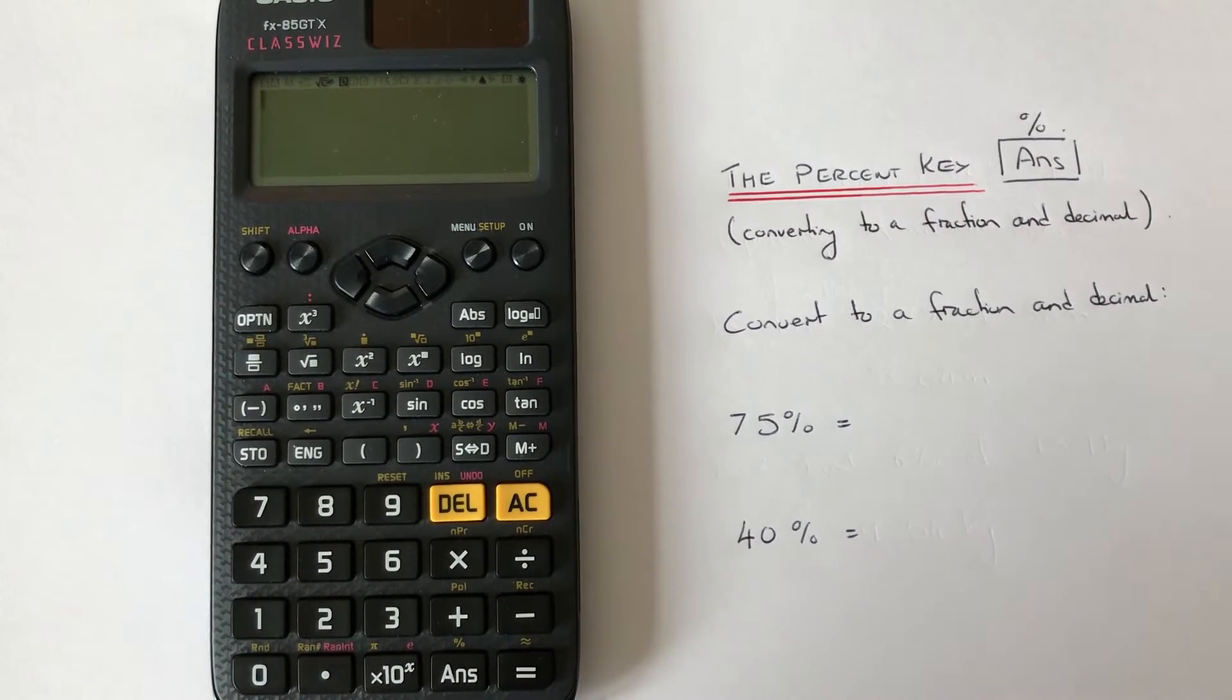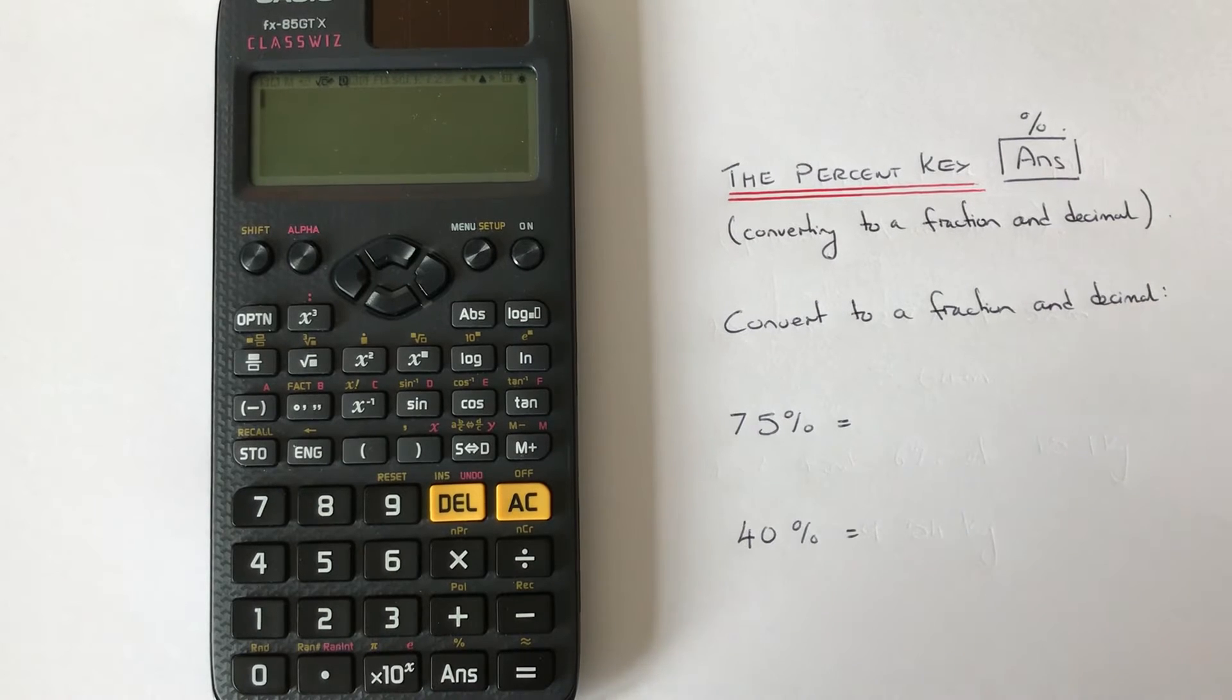Hi guys, welcome back. This is Maths 3000. Today I'm going to show you how to use the percent key on a Casio Classwiz scientific calculator, and we're going to use it to convert it into a fraction and decimal.